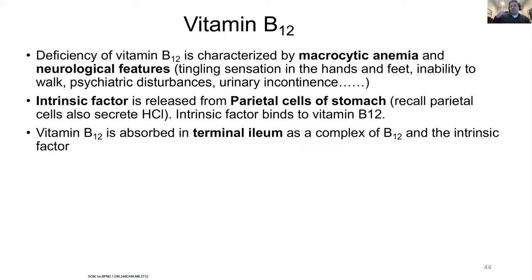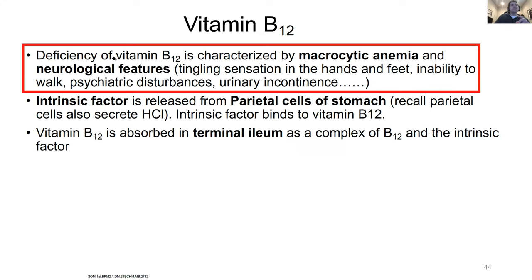If someone comes in with megaloblastic anemia, you need to determine: is it folate or B12 deficiency? This is super high-yield but fairly easy. Someone with folate deficiency will have the same symptoms as B12, but with B12 you also get neurologic problems. Unfortunately, even correcting the B12 doesn't exactly fix these neurologic problems - it could fix the megaloblastic cells, but you'll still have neurologic features. The key difference: if you see megaloblastic anemia, are there signs of neurologic deficiency?